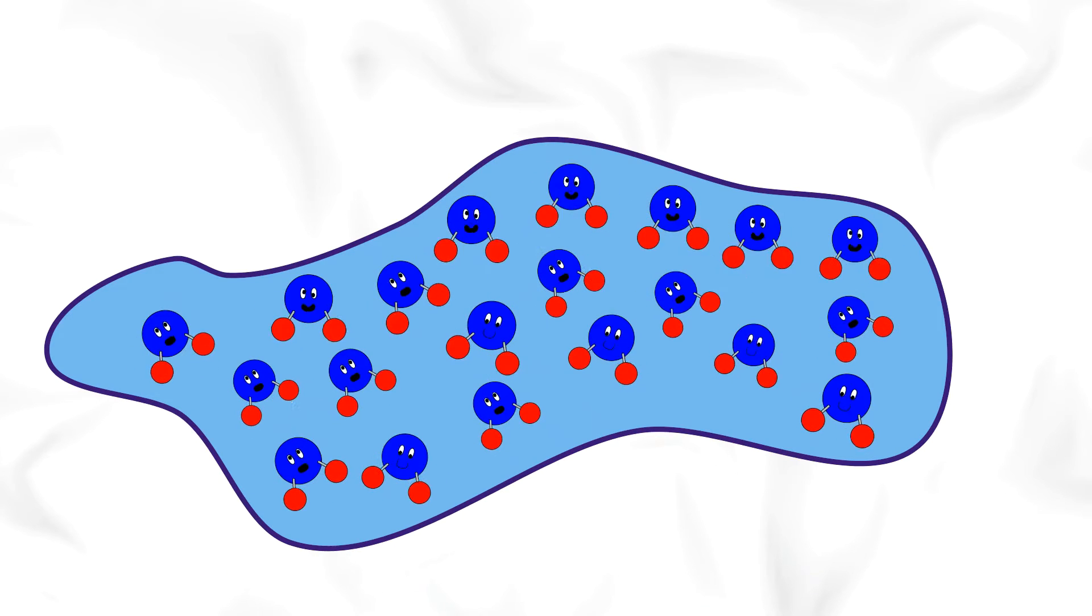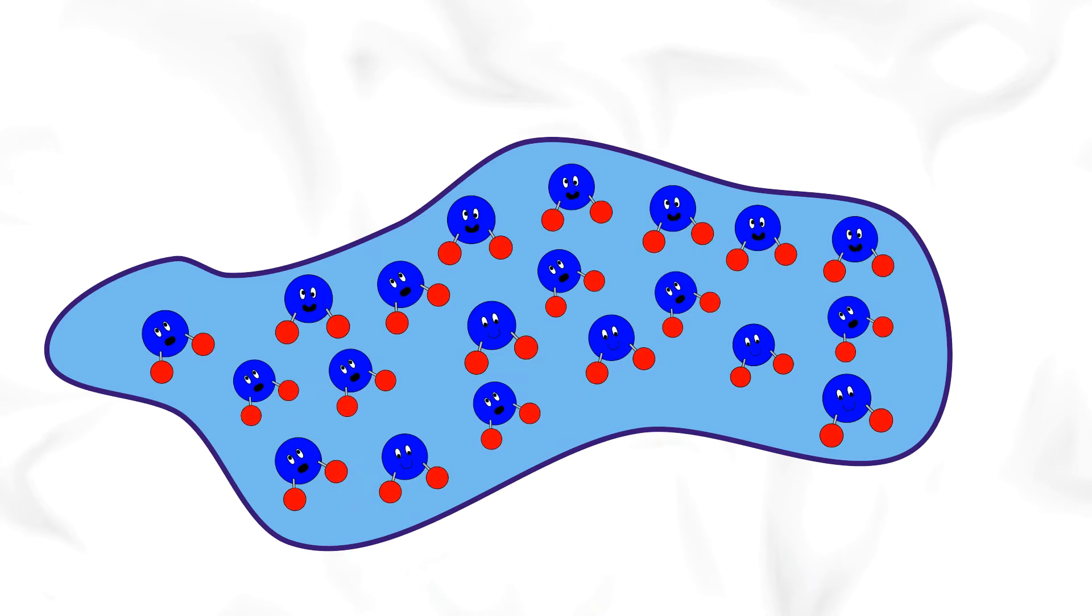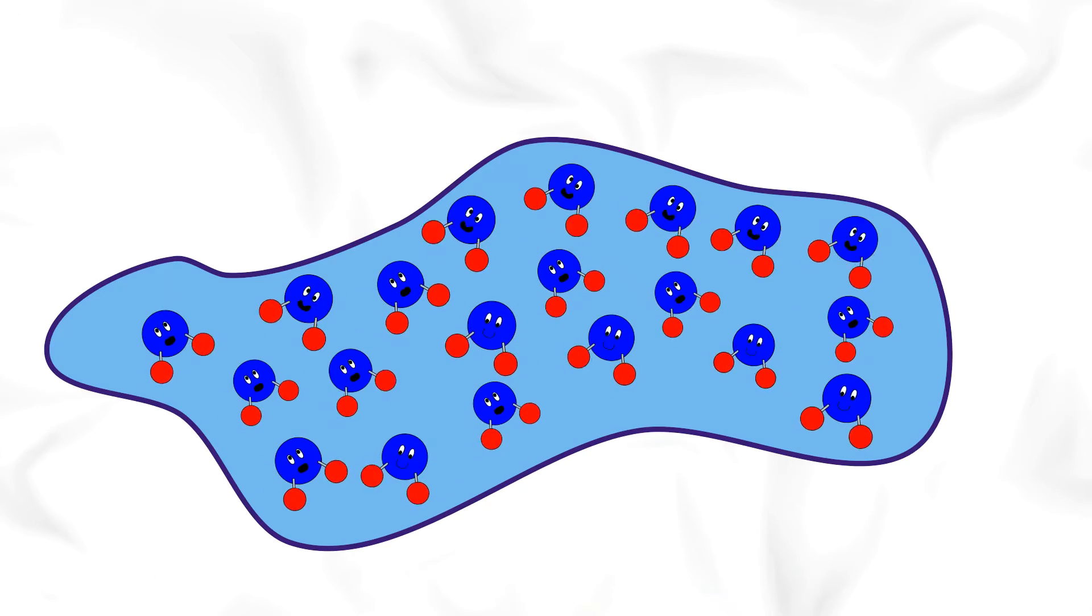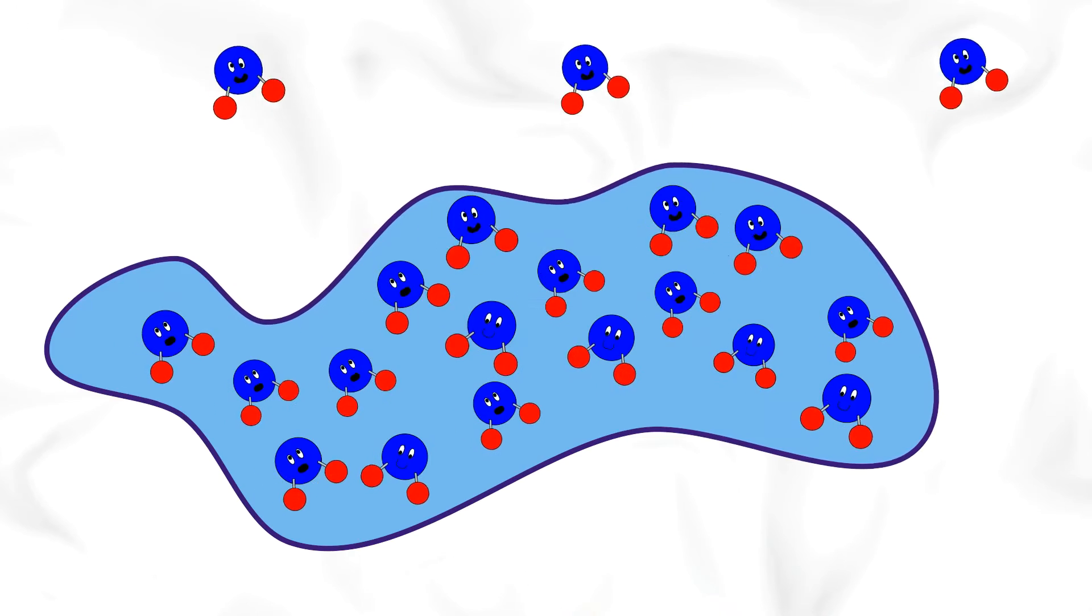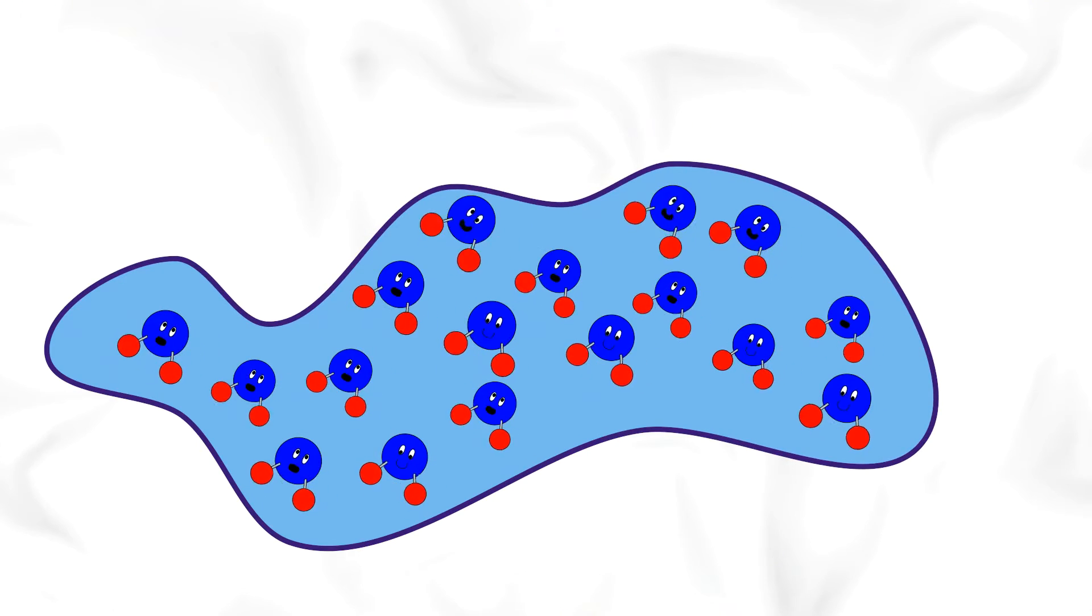Our puddle was made of lots of water molecules. Some water molecules were moving faster than others. These molecules that were faster escaped into the air.